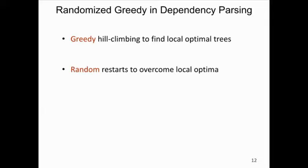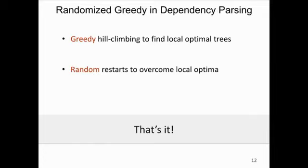The randomized greedy algorithm comes from our earlier dependency parsing system. Instead of jumping directly into the joint modeling problem, I'll first introduce this algorithm in the context of dependency parsing, then explain how to extend it to joint inference. The key idea is simple: we first use greedy hill climbing to find local optimal trees, and second, we overcome the local optimum problem using random restarts.